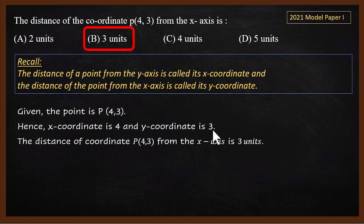If you are confused and thought the answer was 4 — that is wrong. Because 4 is the distance from the y-axis (the x-coordinate), not the x-axis.